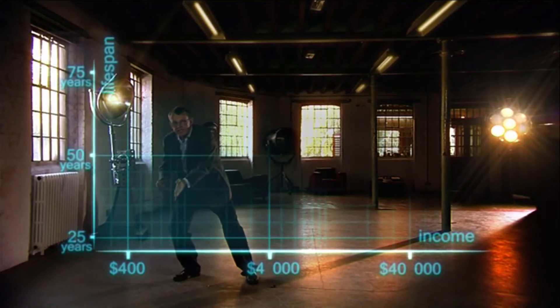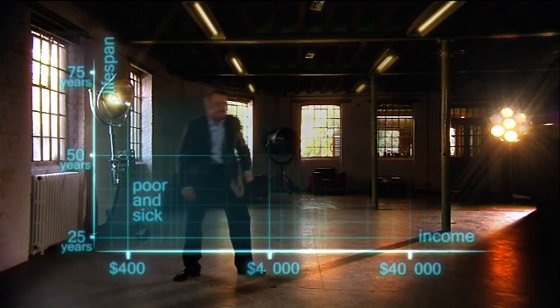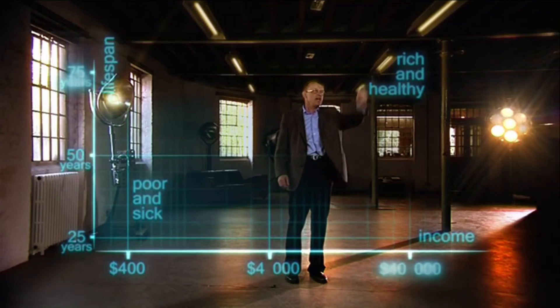So, down here is poor and sick. And up here is rich and healthy.